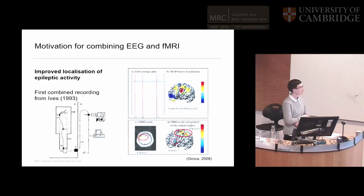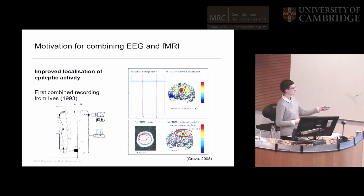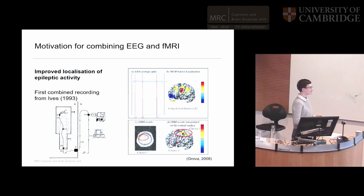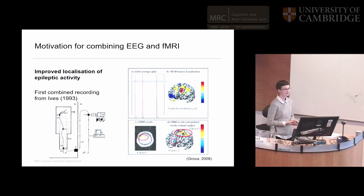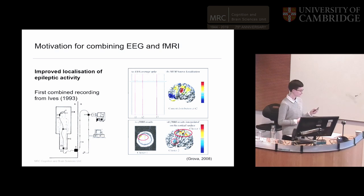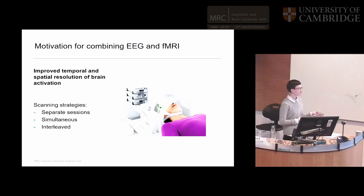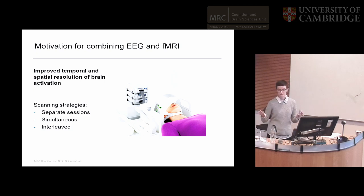One of the first studies combining EEG and fMRI was actually motivated by trying to improve localization of epileptic activity quite a long time ago. You can see the setup they're using here — a couple of electrodes linking back to outside the scanner. Essentially they were trying to see if they could detect epileptic activity in the EEG, identify when it occurs, and then look at the brain activity at those time points in relation to those epileptic spikes. Moving forward, we now have more complicated setups with fixed caps inside the scanner and amplifiers capable of going inside the MR environment.